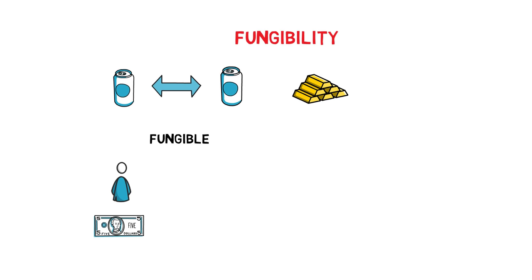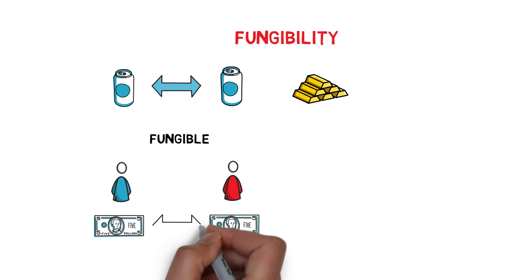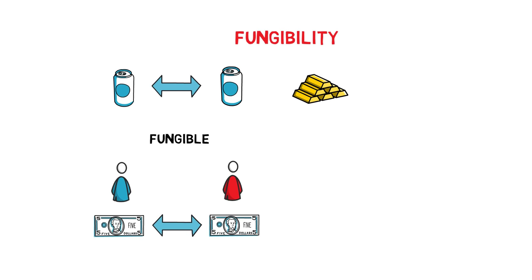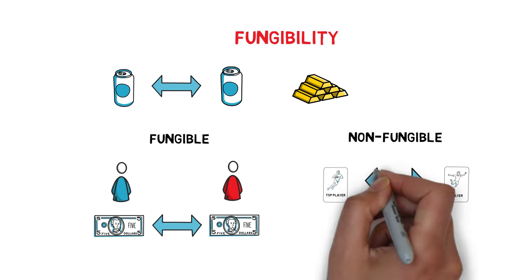If Alice has a $5 banknote, she can replace her banknote with Bob's $5 banknote without this affecting Alice or Bob. On the other hand, Alice's favourite limited edition basketball card is a good example of something non-fungible. Each card is treated as a collectible and has individual properties. A card with one player doesn't usually have the same value as a card with another player.